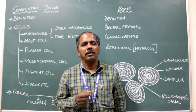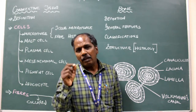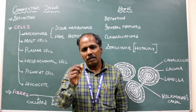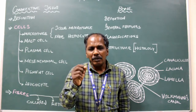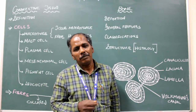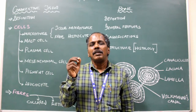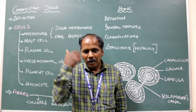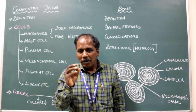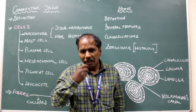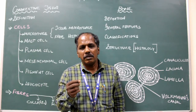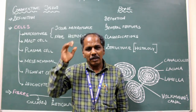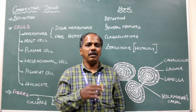The skull — the skeleton of the head is known as the skull. The skull without the mandible is called the cranium. The cranium is divided into viscerocranium and neurocranium. The bones forming the face constitute the viscerocranium, whereas the bones which cover and protect the brain form the neurocranium.